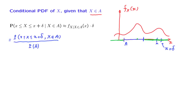The second case to consider is when little x lies somewhere inside the set A. In that case, our little interval from little x to little x plus delta might have this form.